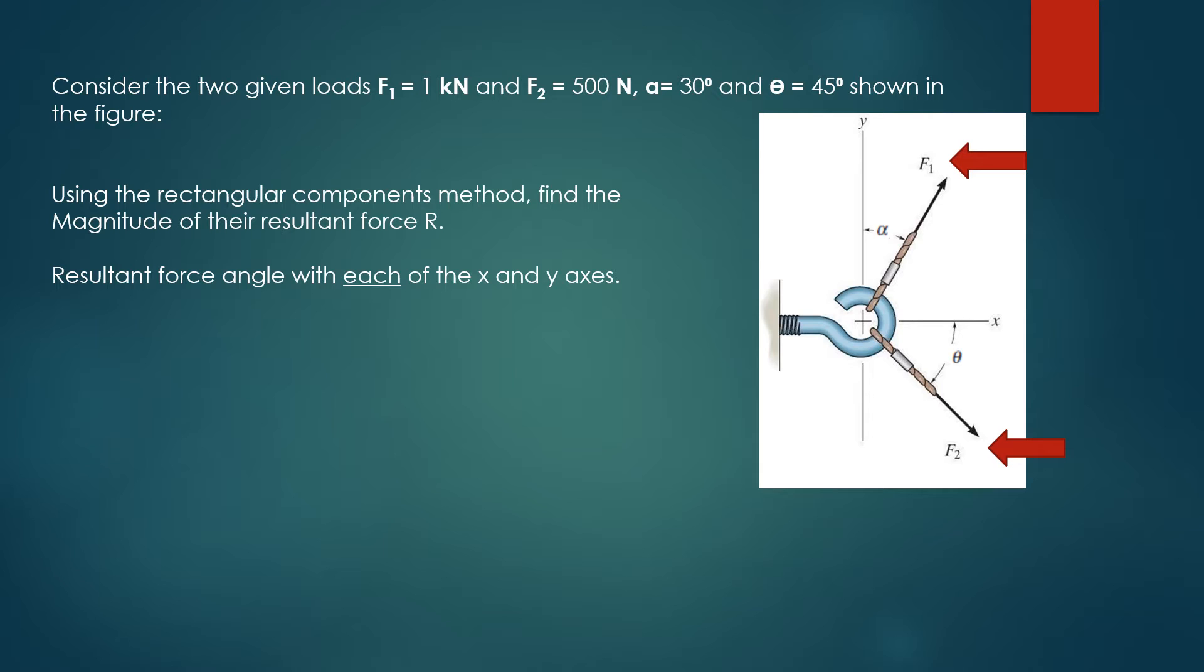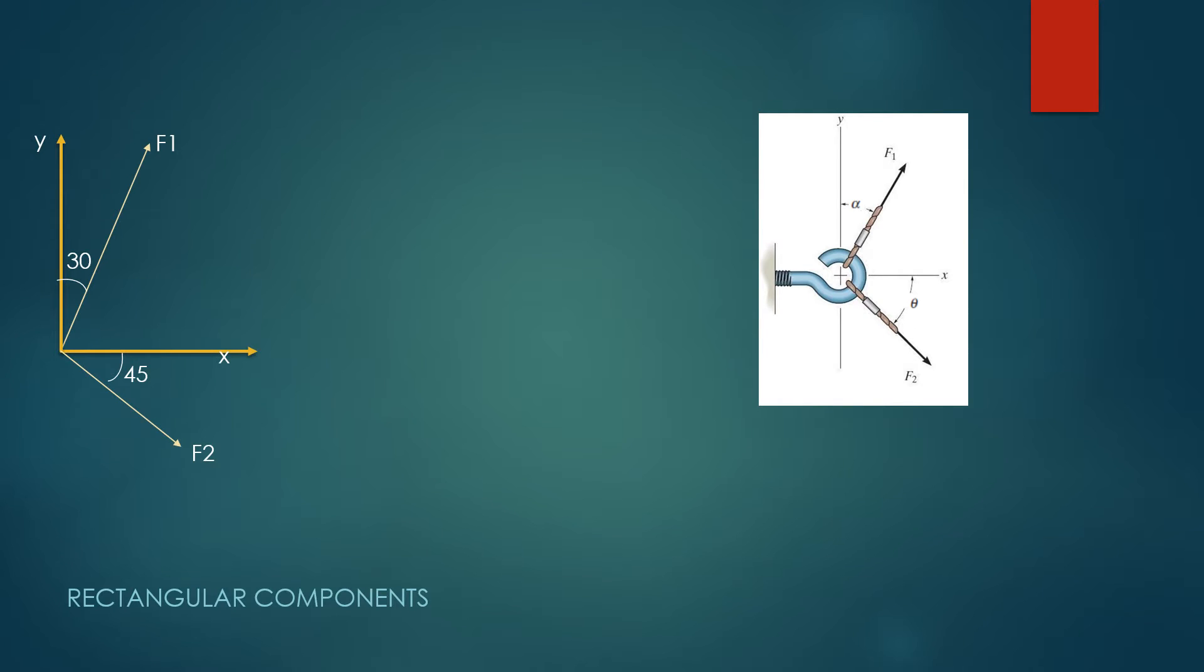We'll also find the resultant force angle with each of the x and y axes. We can simply show the forces acting on the eye bolt as shown here by F1 and F2 with angles of 30 and 45 degrees.